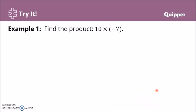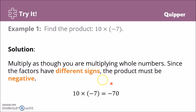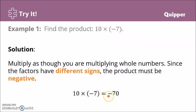Let's have an example: find the product of 10 times negative 7. Multiply as though you are multiplying whole numbers. Since the factors have different signs — positive 10 and negative 7 — the product must be negative. So 10 times negative 7, the answer is negative 70.